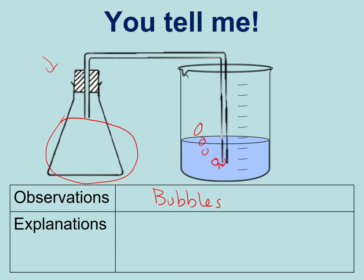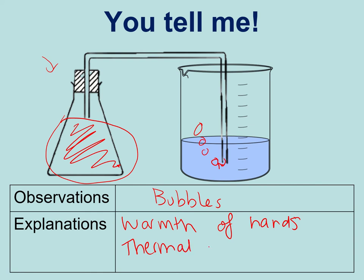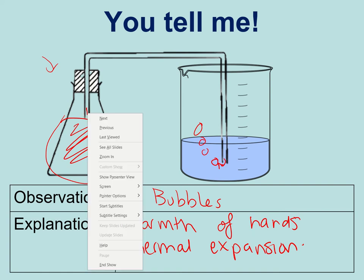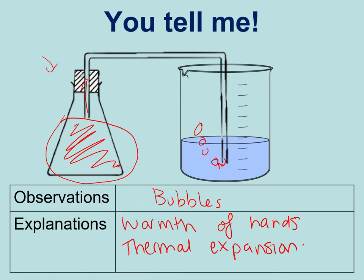The reason for that is because of the warmth of your hands warming the air that is in here. That causes something called thermal expansion, which sounds complicated but really it's quite simple. It just means that because you warm the air up, it takes up more space. So some of the air gets pushed along this tube and is forced out in bubbles.